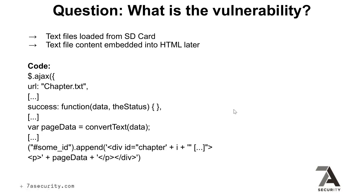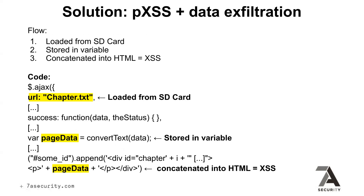Another thing is loading text files from the SD card. This is another app — interesting because it was using JavaScript to load data from a text file from the SD card. Does anybody see what the vulnerability is? It is cross-site scripting. We have a correct answer from Jason. The file is loaded from the SD card, stored in a variable, and concatenated into HTML leading to XSS. The problem is in the last line — page data is appended between HTML tags. That's always a bad sign.